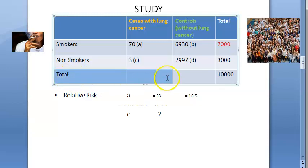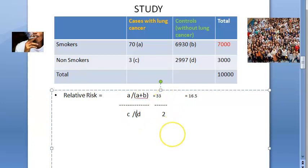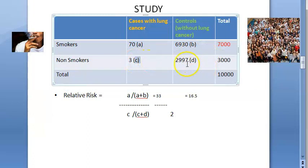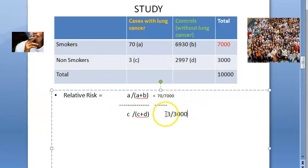So what is relative risk? It is incidence among the exposed divided by incidence among the not exposed. Using the table notation, it is a divided by (a + b), divided by c divided by (c + d). Here that gives us 70 divided by 7,000, divided by 3 divided by 3,000.